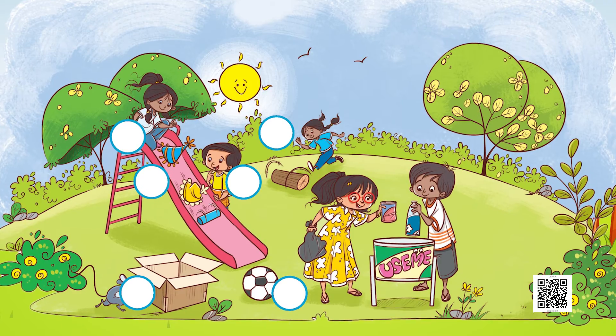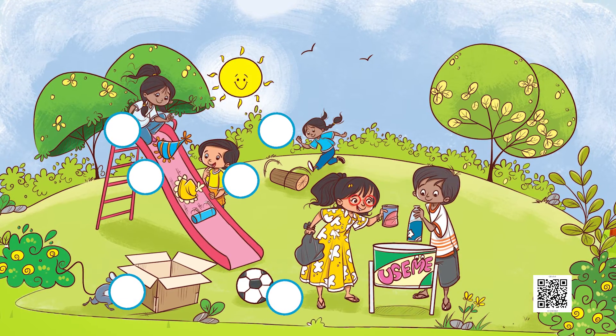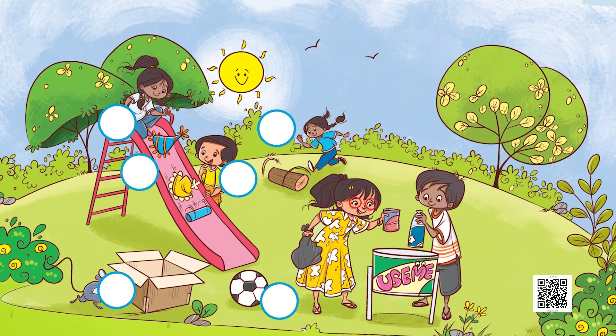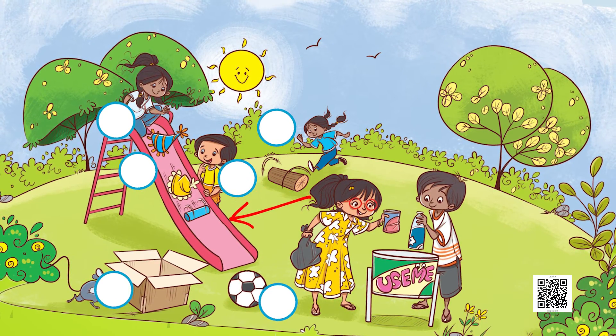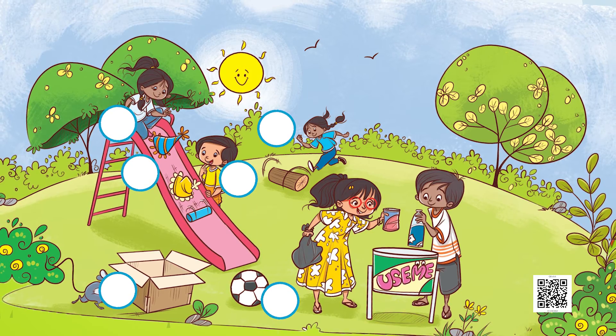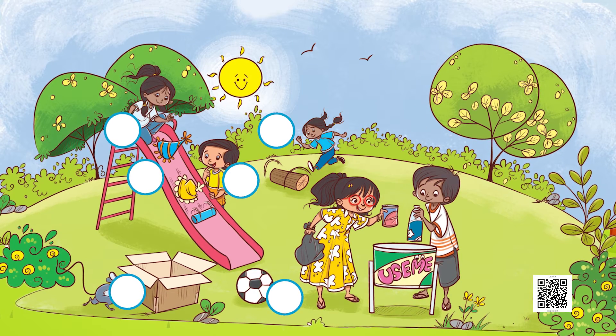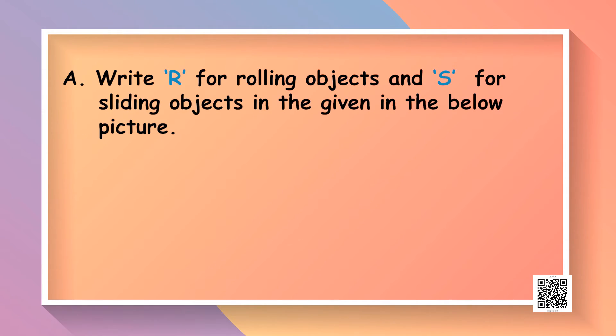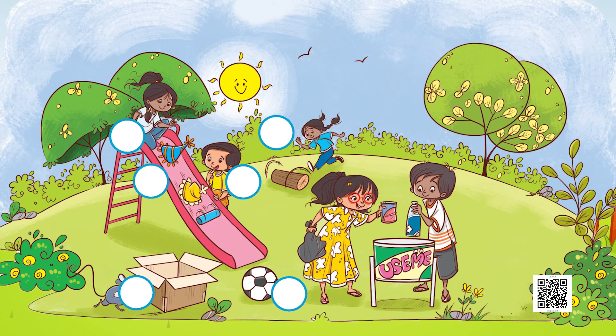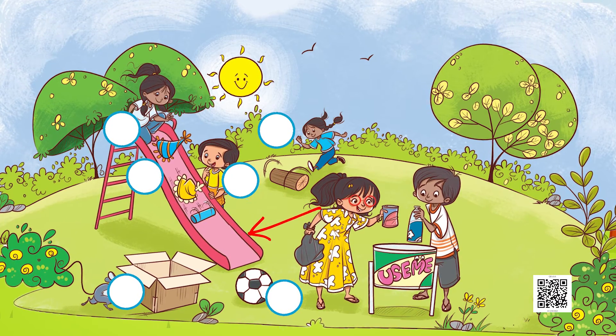Another example for you. There is a picture of a park. You see some children playing. You see a slide and many objects. Now you have to tell me what objects in the picture would roll and what objects would slide. You have to write R for rolling objects and S for sliding objects. I think there is a slide — that is definitely a surface on which children will slide. Then there is a box. Will it slide or will it roll?